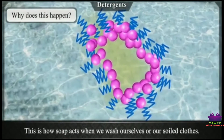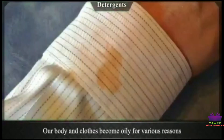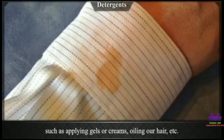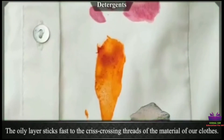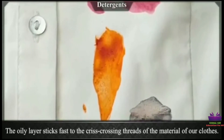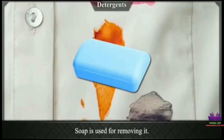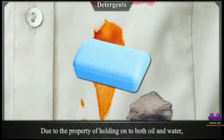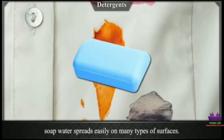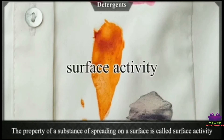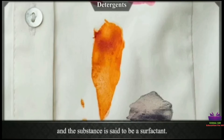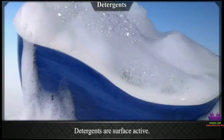When we wash ourselves or our soiled clothes, our body and clothes become oily due to applying gels, creams, or oiling hair. The oily layer sticks fast to the threads of the material. Soap is used to remove it due to its property of holding on to both oil and water. The property of a substance of spreading on a surface is called surface activity, and the substance is called a surfactant. Detergents are surface-active substances, and one effect of surface activity is lather formation.